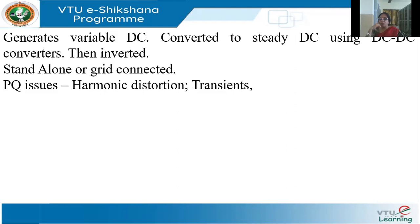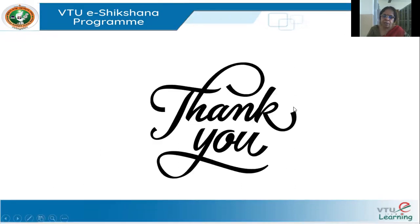The main power quality issues with PV are harmonic distortions due to the presence of the inverter, and transients due to switching. Both wind and solar PV fall under the category of renewable energy because they use wind and solar power which are available in plenty. They also fall under distributed generation because they can be located anywhere in the system.